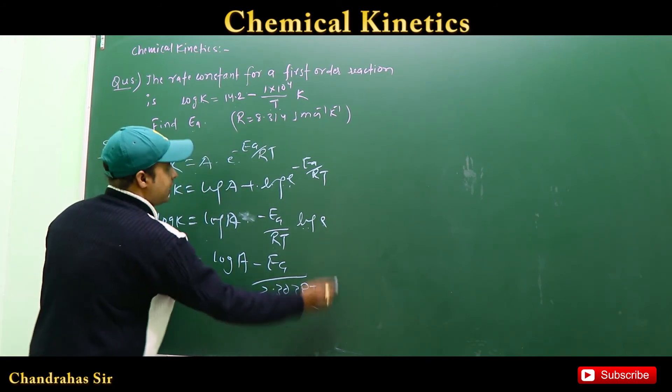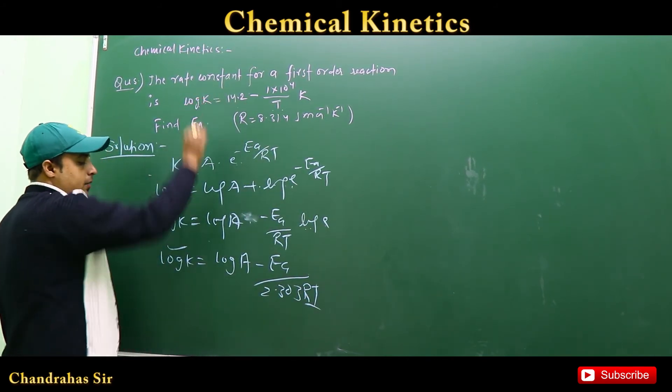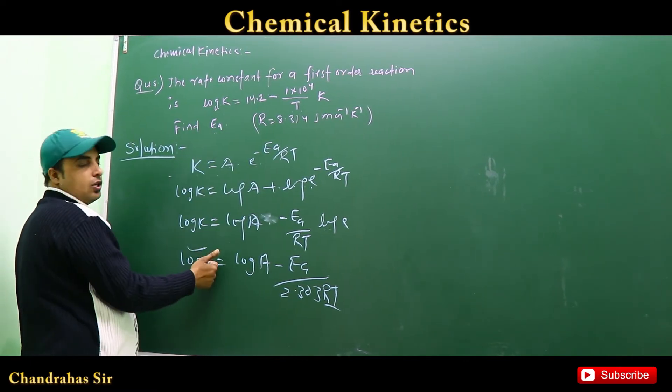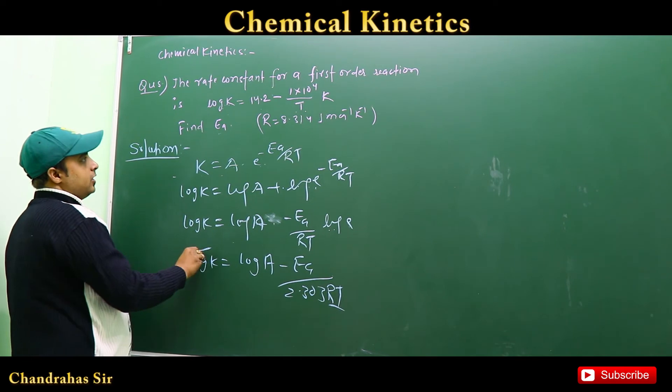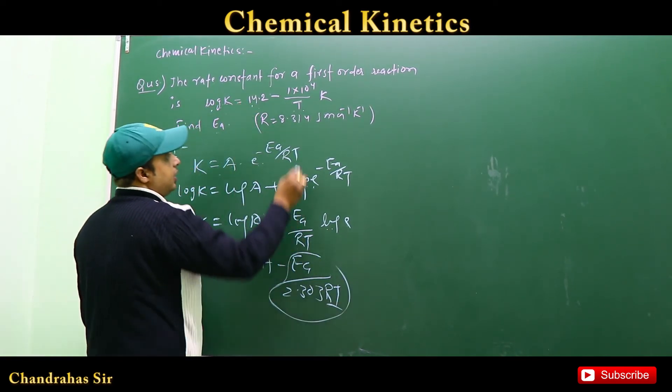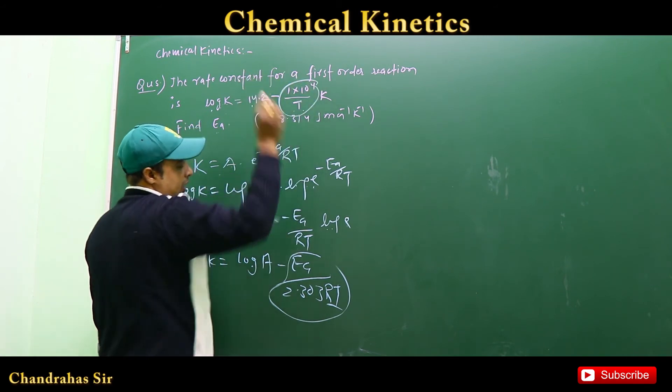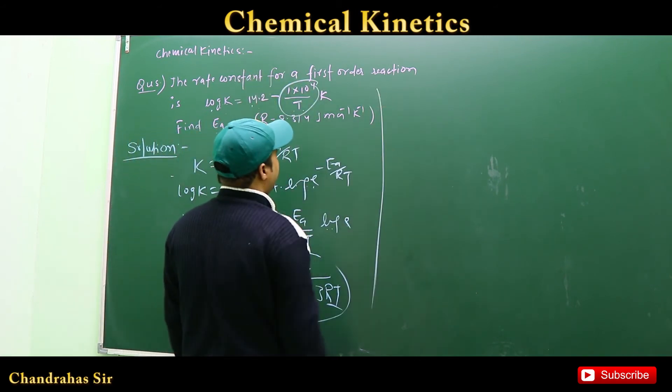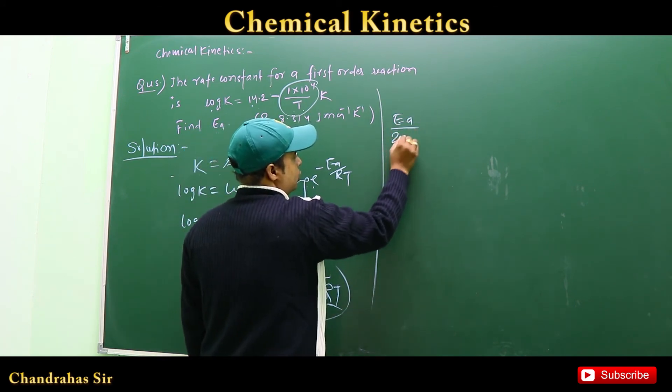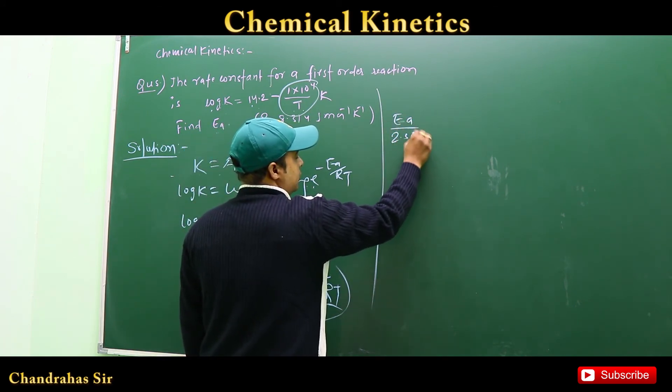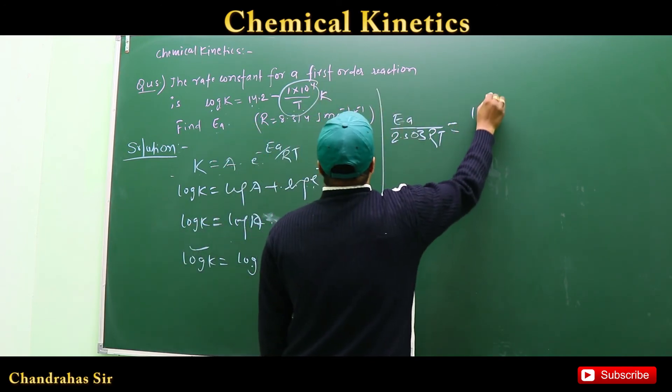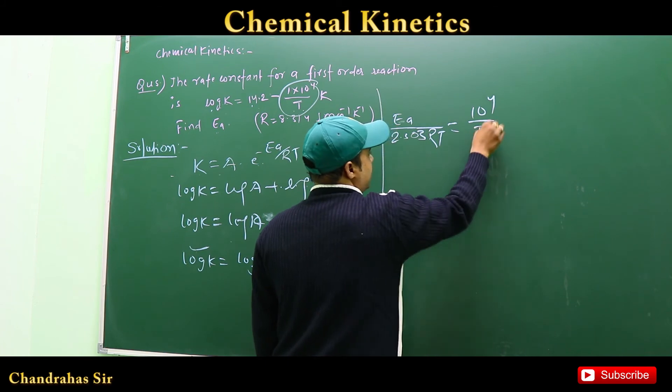Now you can see log K and T in the equation. Comparing this with the given equation log K equals 14.2 minus 1 into 10 to the power 4 upon T, we can find the activation energy.